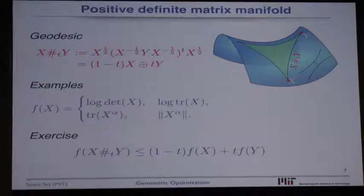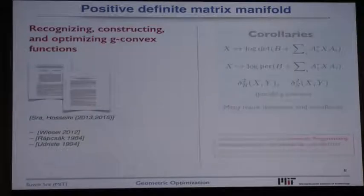Exercise. Here are some examples that I claim to be geodesically convex. It's a good exercise to try out just to convince yourself this is essentially the non-commutative way of working with positive numbers. An interesting by-product is log determinant of X is one of the most well-known concave functions in Euclidean land. In this curved land, it happens to be a convex function. Or trace of X to the power alpha, alpha can be any positive number. In Euclidean land, X to the power alpha for alpha smaller than one will be non-convex, but here it happens to be convex along these curves.